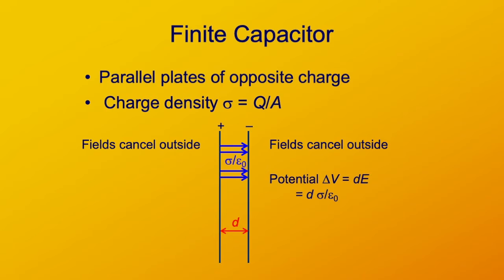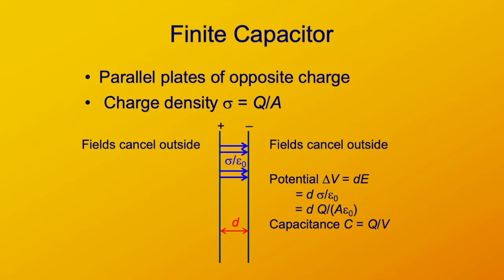Here I've substituted the electric field strength sigma over epsilon naught for E, and now we're just going to substitute Q over A for the charge density. The capacitance, recall, is the charge separated on the plates divided by the voltage required to do that, so that's Q over V. We've just made an expression for delta V.